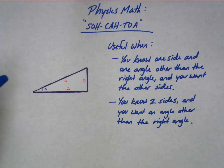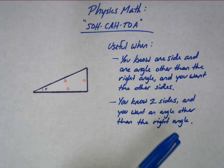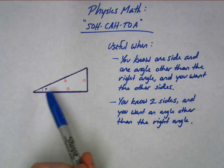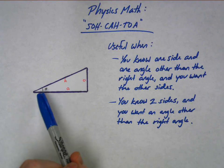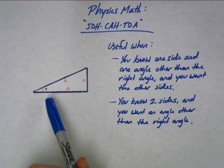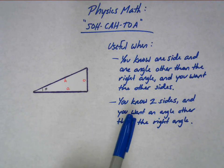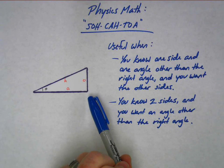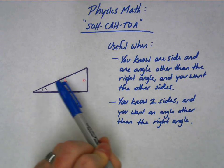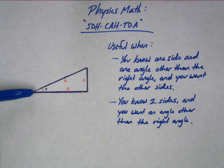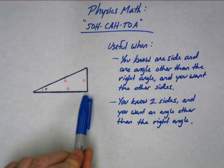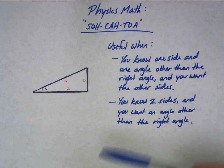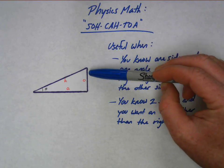So let's talk about the right triangle for a second. Obviously, this is your right angle right here, the 90 degree angle. When we're talking about this, we define one of the other angles as the angle that we're talking about. So let's say we're talking about this angle here, labeled theta. In a right triangle, there's a side called the hypotenuse. The hypotenuse is always going to be opposite of the right angle. There's a side that is adjacent to angle theta, labeled A for adjacent, and a side that is opposite of angle theta, labeled O for opposite.